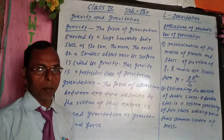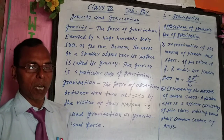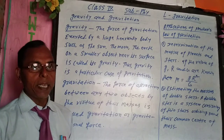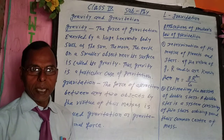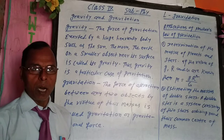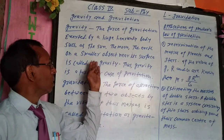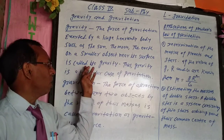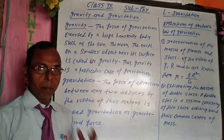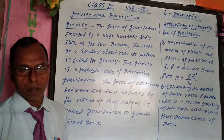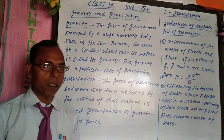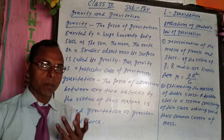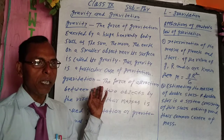What is gravity? The force of gravitation exerted by a huge heavenly body like the Sun, the Moon, or the Earth on a smaller object near its surface is called its gravity. It means that the force of attraction applied by a huge heavenly body on a smaller body near its surface is called gravity.